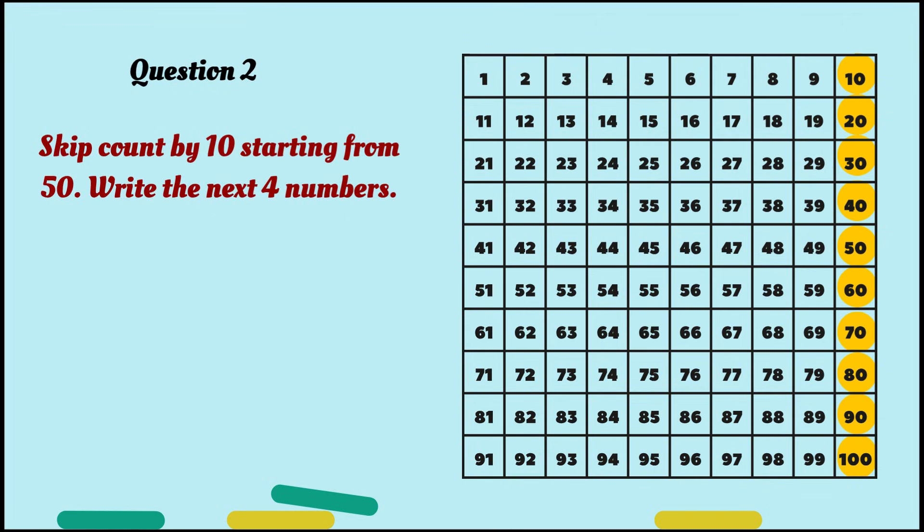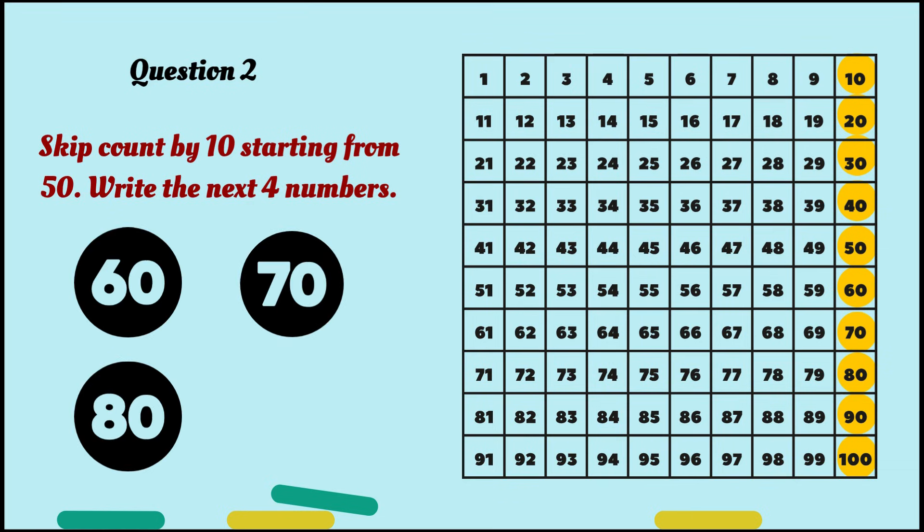Question number 2. Skip count by 10, starting from 50. Write the next 4 numbers. If you're stuck, always refer to the grid. It's always by your side. But I'm sure you guys have got the hang of this skip counting thing anyway. The next 4 numbers are 60, 70, 80, and 90.